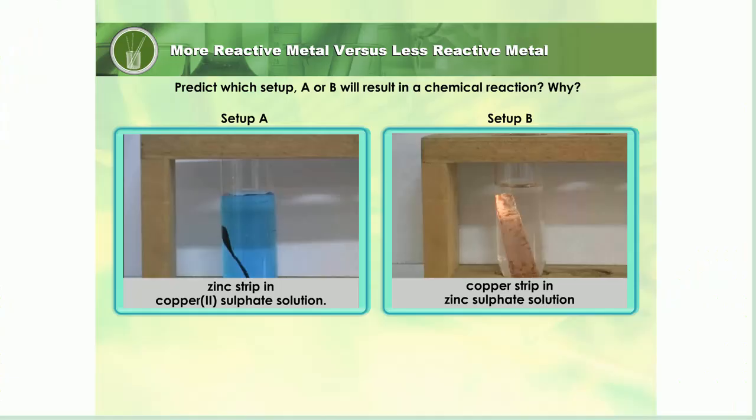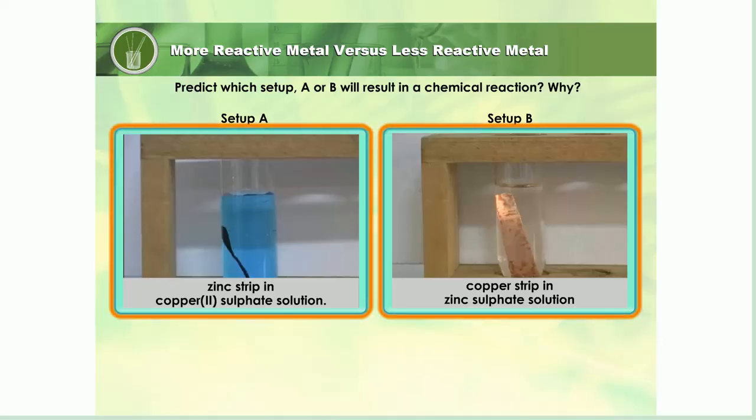The pictures show a zinc strip dipped into copper(II) sulfate solution, and a copper strip dipped into zinc sulfate solution. Predict which setup, A or B, will result in a chemical reaction. Why?